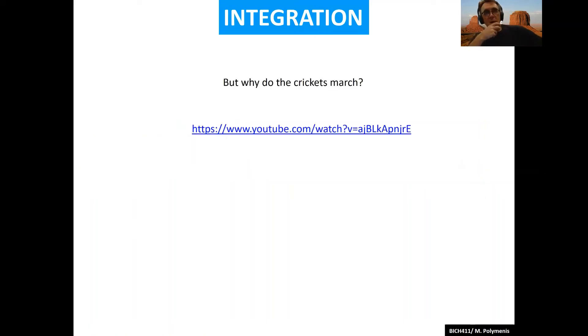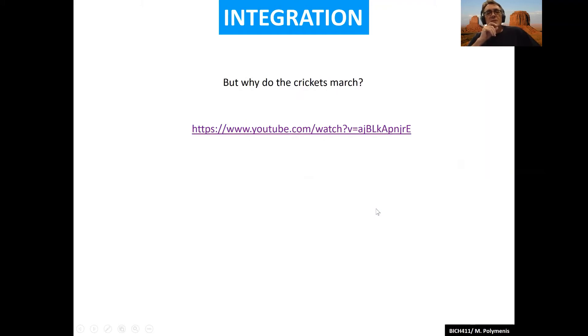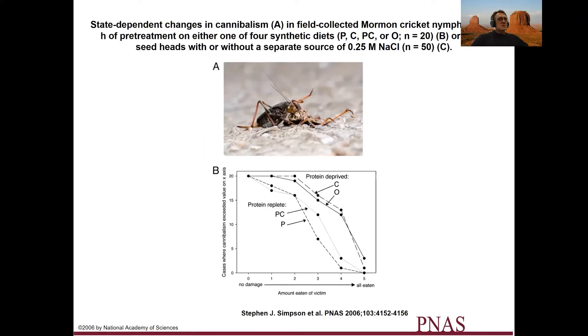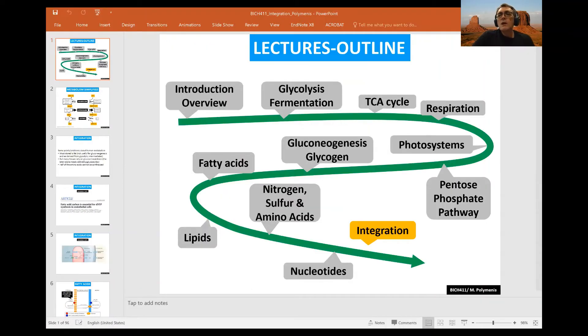Why do the crickets march? Let's watch this again. What I want you to pay attention to is how they have a direction. They march to a specific point. They are not random. There is occasionally a weird guy, but all of them go from left to right. Why do they do this?